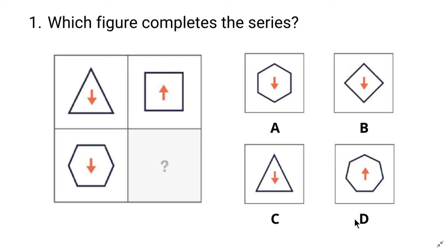The first thing we need to do here is to find a pattern. We are not going to focus on the whole image at once because it makes things complicated. We should always keep our focus on a single element and try to find the pattern of that element. Here we can see two elements in each image: a shape and an arrow.